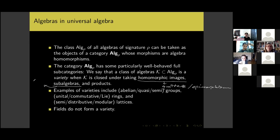A class is also considered if it's closed under sub-algebras, which are sub-objects in the category-theoretic sense — subsets closed under all basic operations — and products, where the product of a collection of algebras has elements which are tuples one from each algebra and operations performed componentwise.